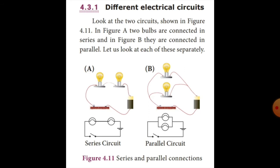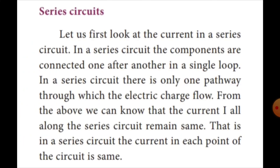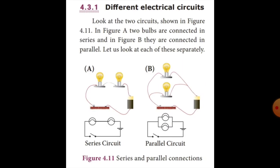Series and parallel connections. In a series connection, the bulb is connected to the battery and the switch is also connected in series. In a parallel connection, the wire is divided and the bulbs are connected across separate branches.